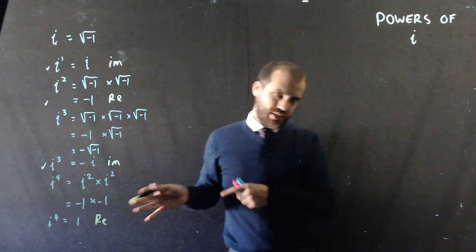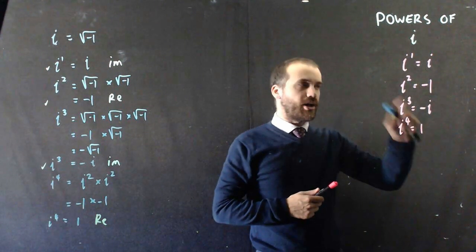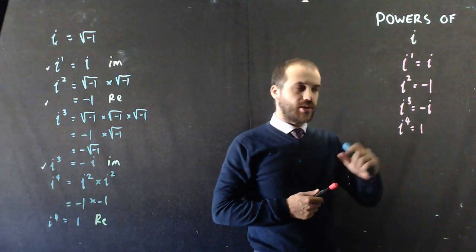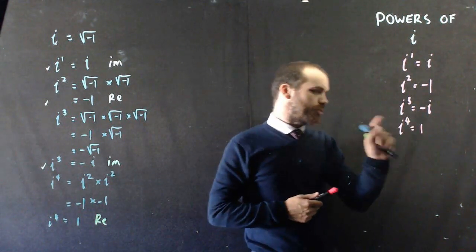Let's put that in a table. It's not quite a table, but you get the idea. i to the 1 equals i. i squared equals negative 1. i to the 3 equals negative i. And i to the 4 equals 1.